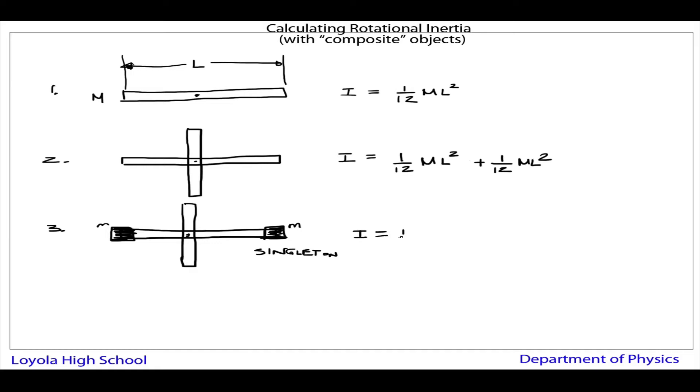And we just add those guys on, and let's see how we do that. So first of all, I have the two propeller blades: 1/12 mL squared plus 1/12 mL squared, plus—for singleton, it's its mass, so little m, times how far it is away from the center squared. So if the entire length is L, this would be L over 2 quantity squared.